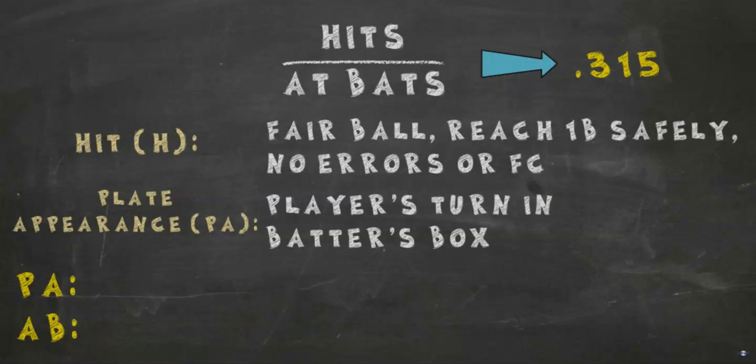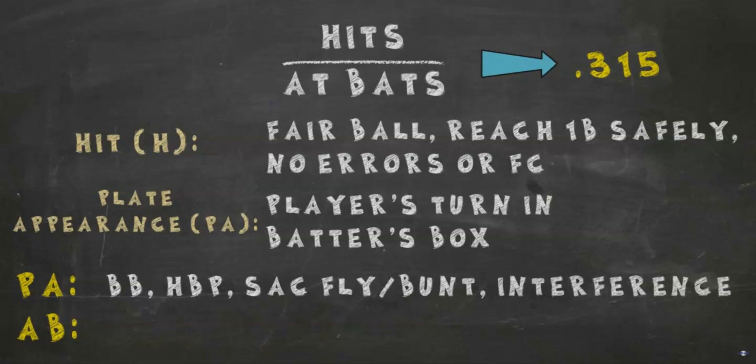What counts as an at-bat? Any time the batter records a hit, records an out, reaches on an error, or reaches via fielder's choice. Batting average uses at-bats instead of plate appearances because its goal is to quantify pure hitting ability.